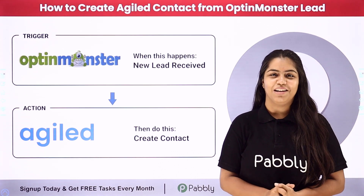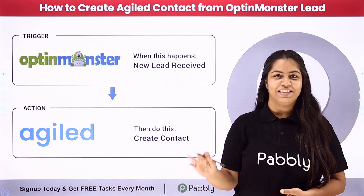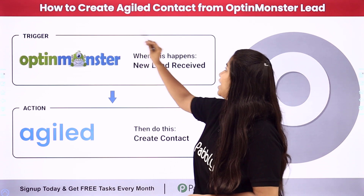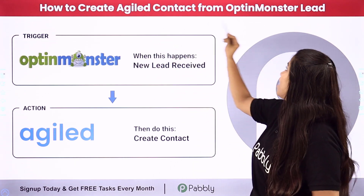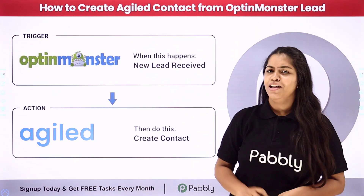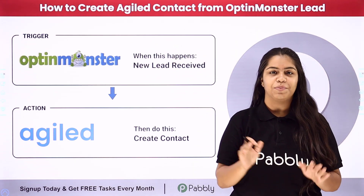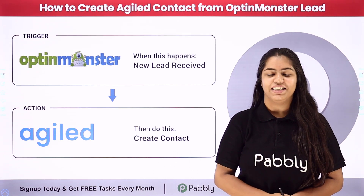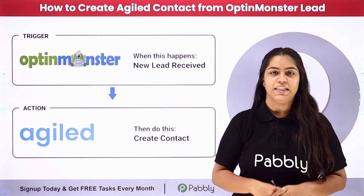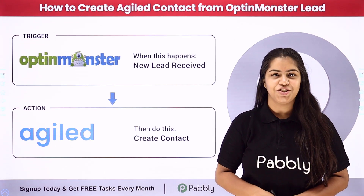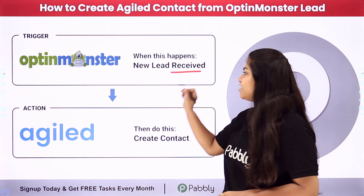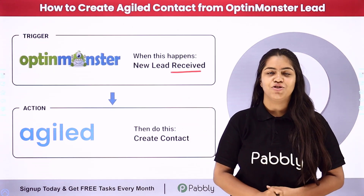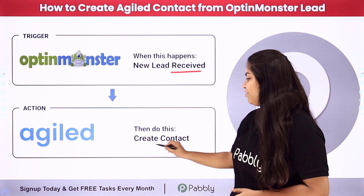Hello everyone, welcome back to Publi. In this video we are going to understand how to create an Agile contact from an OptinMonster lead. If you are also using OptinMonster for your business, this video is definitely for you. I want that as soon as a new lead is received in my OptinMonster account, a contact should automatically be created in my Agile too.